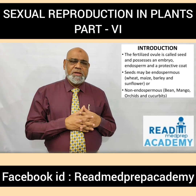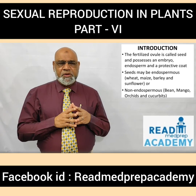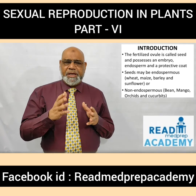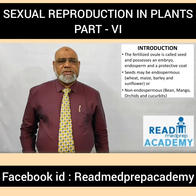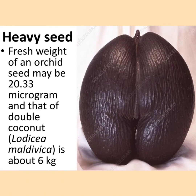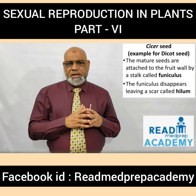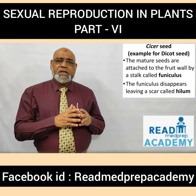The fertilized ovule is called the seed and possesses an embryo, endosperm, and a protective coat. Seeds may be endospermous, like wheat, maize, barley, and sunflower, or non-endospermous, like bean, mango, orchids, and cucurbits. The fresh weight of an orchid seed may be as little as 20.33 micrograms, whereas a double coconut (Lodoicea maldivica) weighs about 6 kg, making it the heaviest seed.